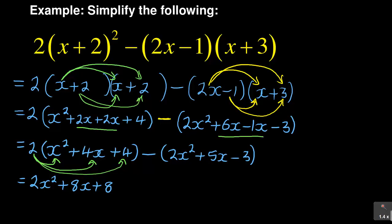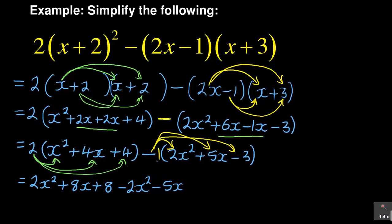Now I have minus 1 multiplying the second group. Minus 1 times 2x squared is minus 2x squared. In this case you just interchange the signs: wherever there is a positive you put a negative, where there is a negative you put a positive. So minus 1 times positive 5x is minus 5x, and minus 1 times minus 3 is positive 3. So 2 was positive, it became negative; 5 was positive, it became negative; 3 was negative, it became positive.